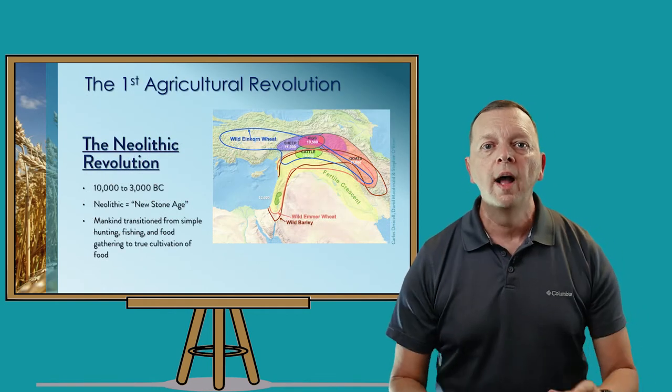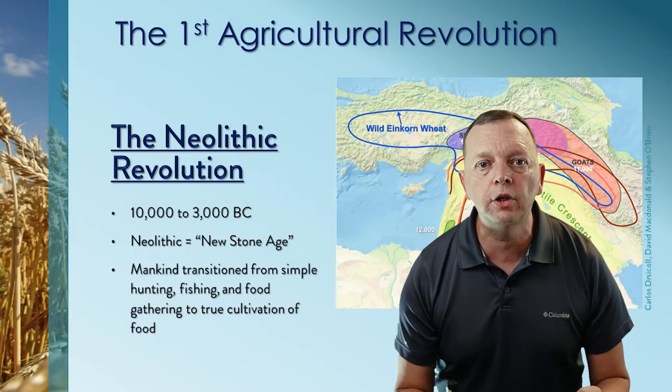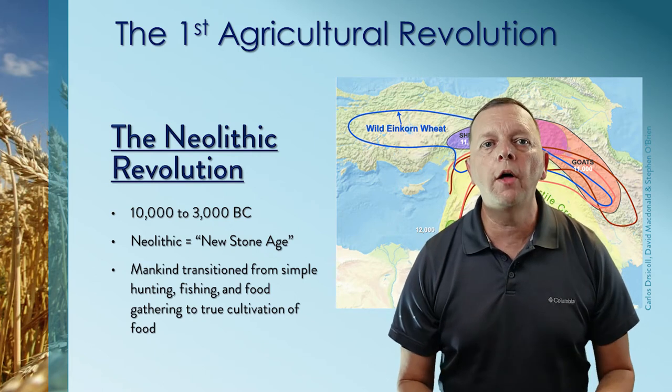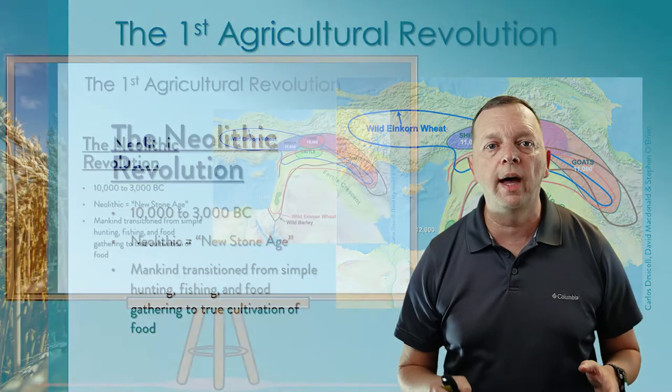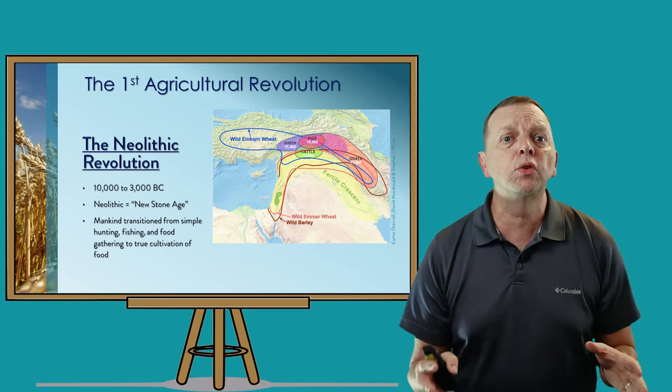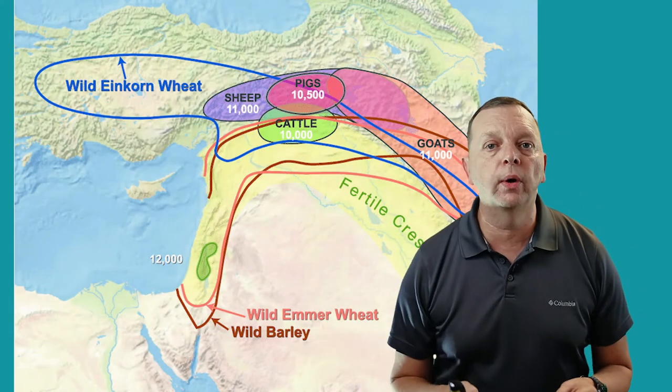Around 12,000 years ago, the greatest innovation of mankind occurred — the finding of agriculture. We call this the Neolithic Revolution, which started around 10,000 BC. The term Neolithic comes from neo, which means new, and lithic, which means stone. So this is really the new Stone Age. This is when mankind found out that if you take a seed, make a hole, put the seed in the hole, cover it up, add water and allow sunlight to come down, you can grow your food. It is absolutely the most important thing that has ever happened to the human species.